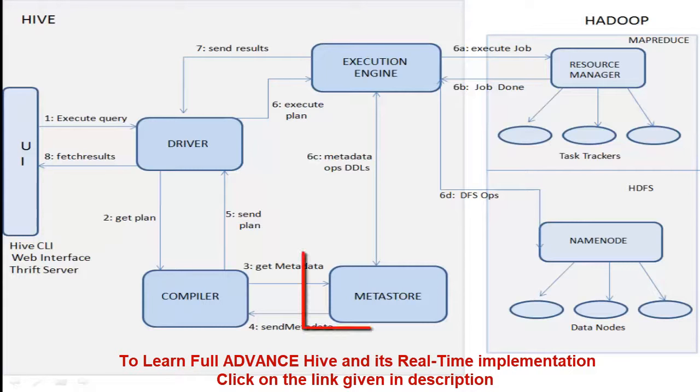And Metastore is a small database which stores all the structure information of our tables, partitions, number of columns in the tables, columns data types, serializers, deserializers, etc. Every information is stored in this Metastore. By default, Hive uses built-in Derby SQL Server as Metastore.